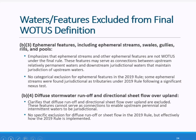The agencies have created two different categories of excluded water features to distinguish between those that may serve as a connection maintaining jurisdiction of upstream intermittent and perennial waters when connected by channelized surface flow in a typical year to downstream jurisdictional waters — such as through ephemeral features including ephemeral streams, swales, gullies, rills, and pools — versus non-channelized connections. While neither type of feature is WOTUS under the final rule, some ephemeral streams may be jurisdictional under the 2019 rule following a significant nexus analysis.